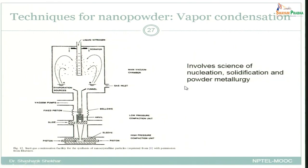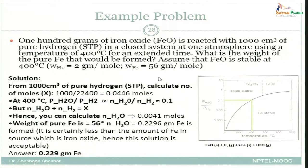This schematic shows how nano-scale powders can be obtained using an atomization technique. When discussing this process, the science of nucleation, solidification, and powder metallurgy are all involved — making it a much more complex process. To end this subtopic on powder manufacturing, we will look at one example problem.